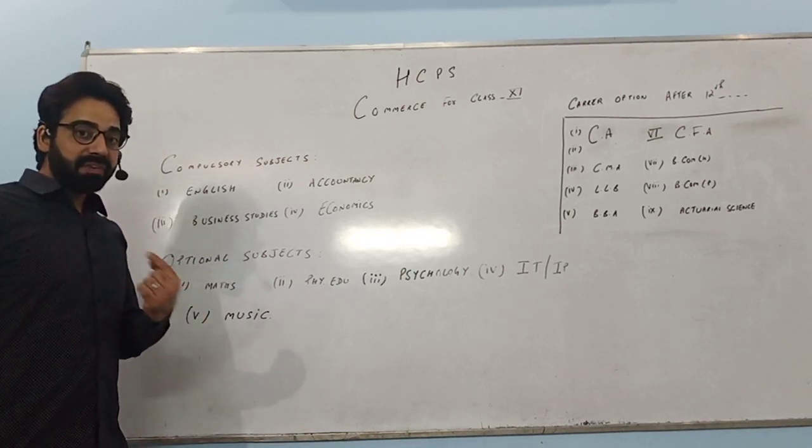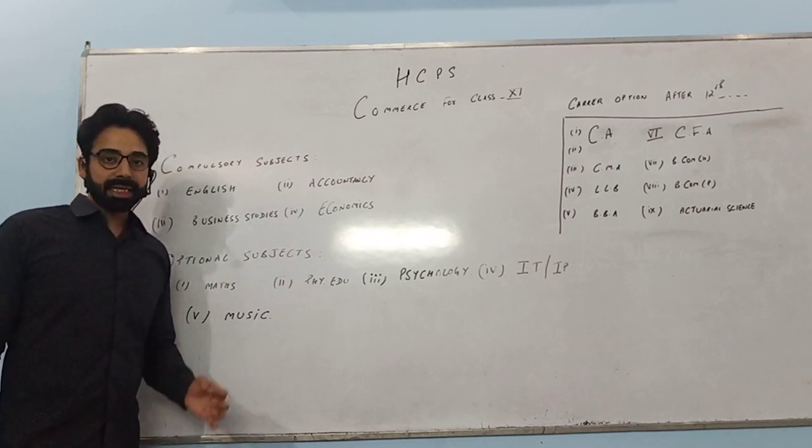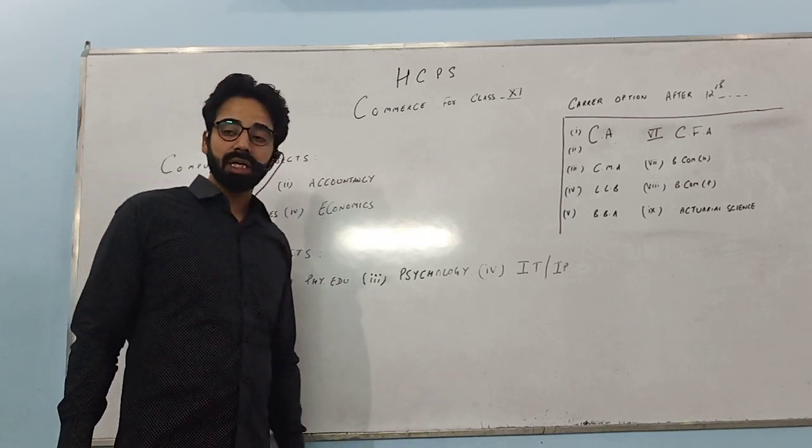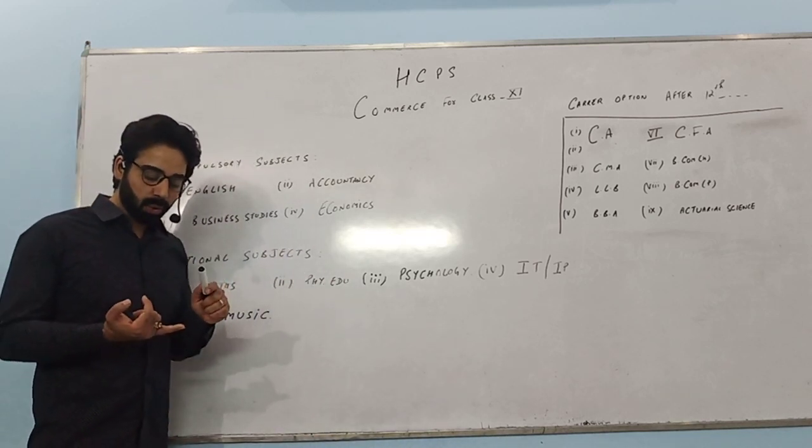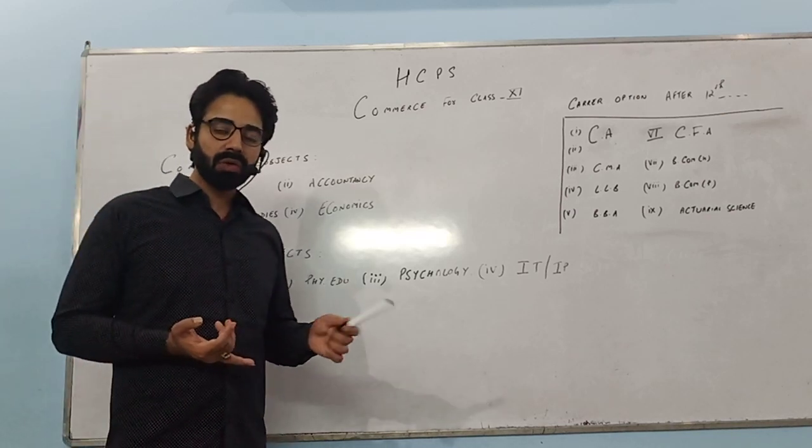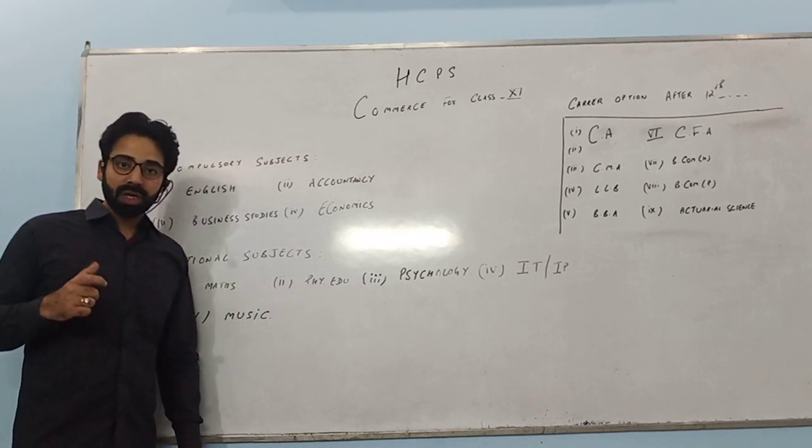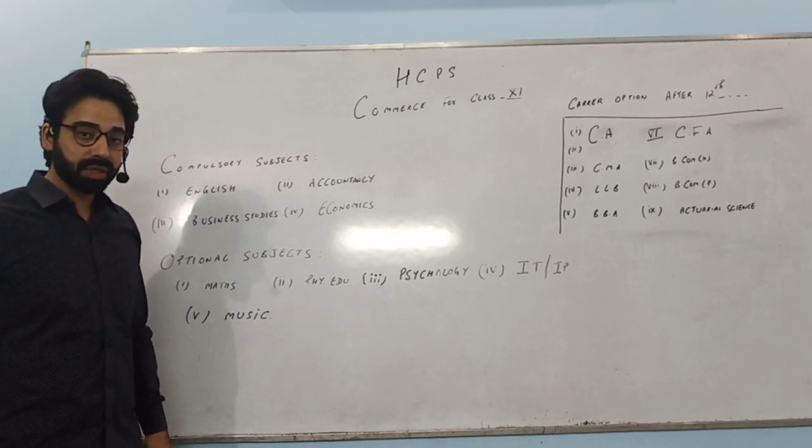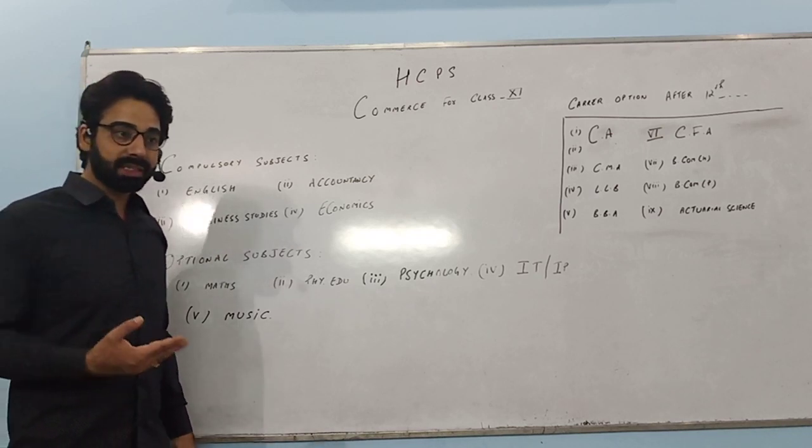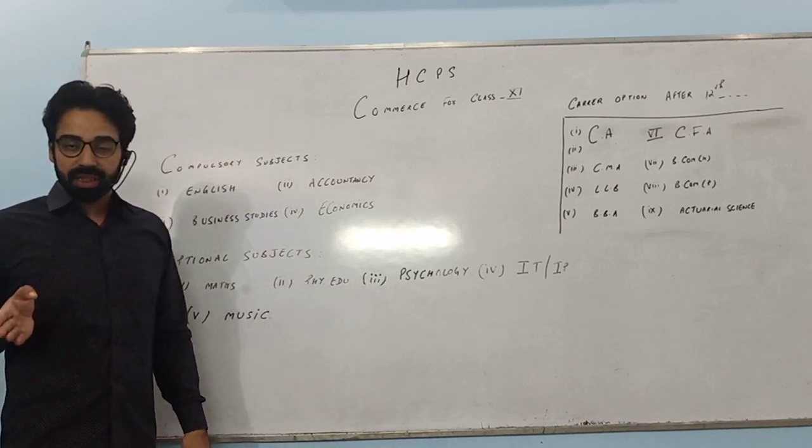And especially, one benefit is, if you have a 10th CGPA of 9 or 9.5 or 9.8, a student can opt for any stream, whether it is science, commerce, or humanities according to interest. But the average candidate, whose IQ level is good but he is not serious - why is he not serious? Because his interest is not generated. His base was weak in the 8th, so in the 9th and 10th he continued.